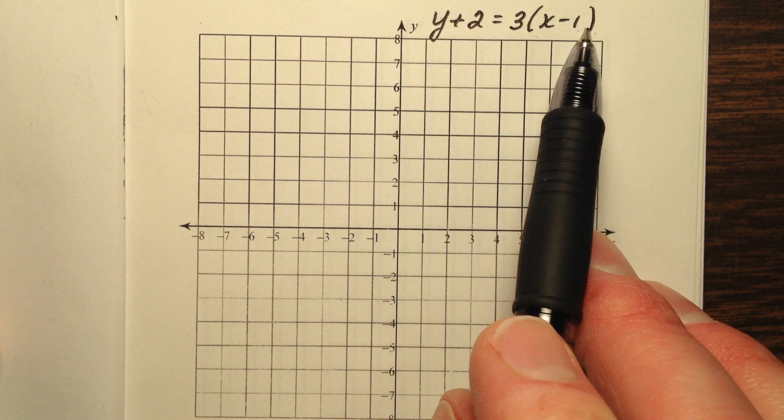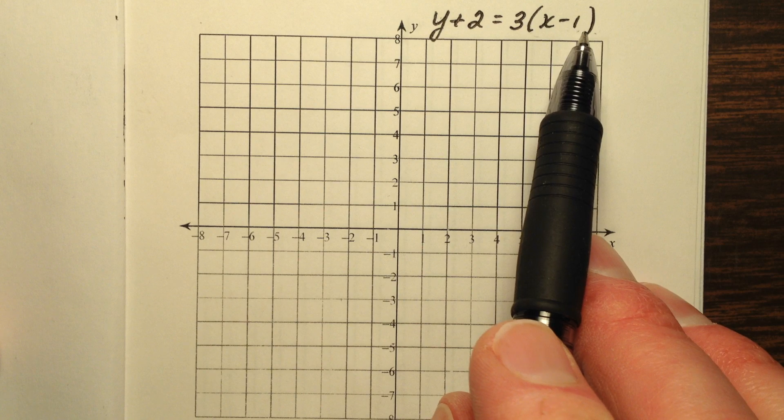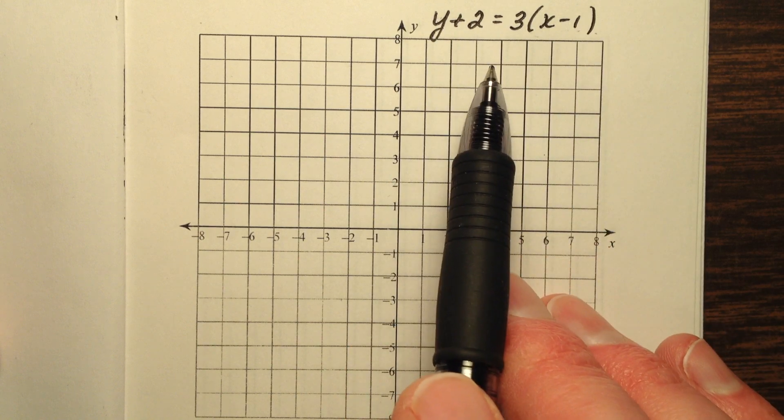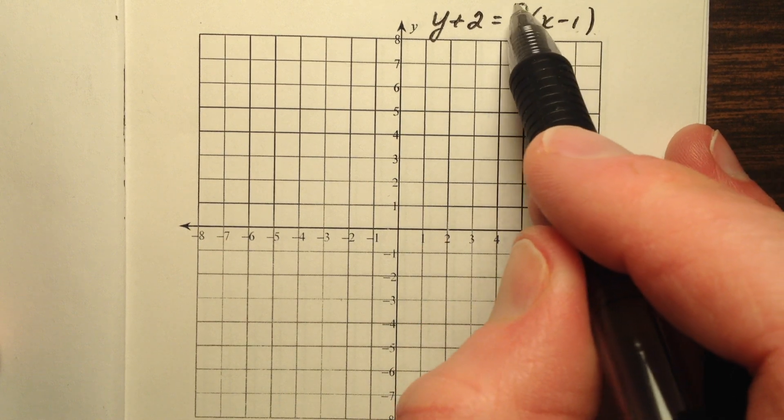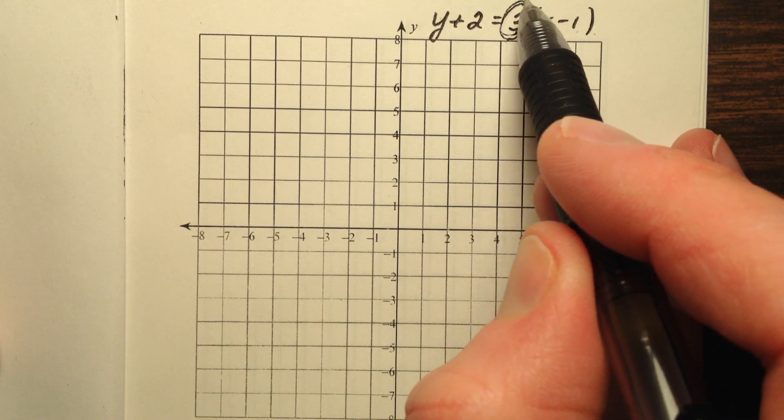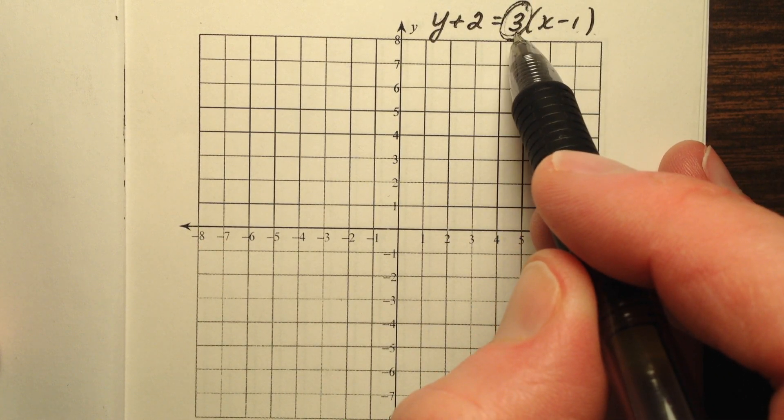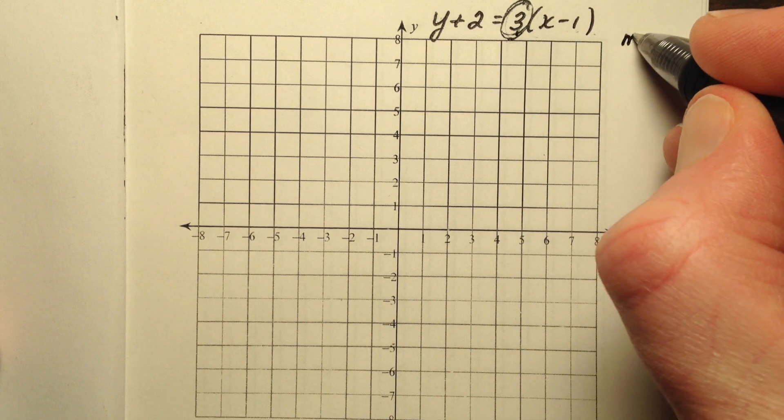So since it's in point-slope form, there are two pieces of information that we're going to glean from this equation: a point and the slope. The slope we know is going to be this value in front of our parentheses, and that's going to be 3. So I can say m equals 3.